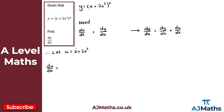du/dx is simply the derivative of x plus 2x cubed with respect to x. Going term by term: differentiating x gives 1, and 2x³ gives 6x². So du/dx equals 1 plus 6x². We now need dy/du. Since y equals (x + 2x³)⁴ and x + 2x³ is u, using this substitution we can say y equals u to the power of 4.